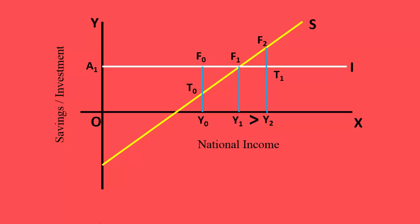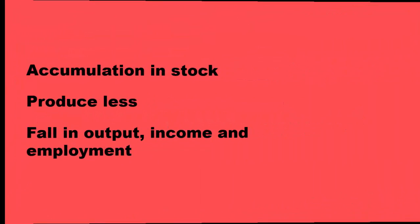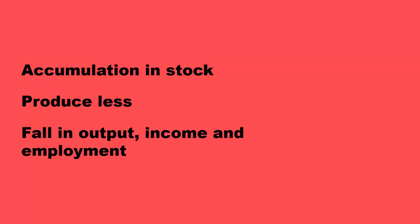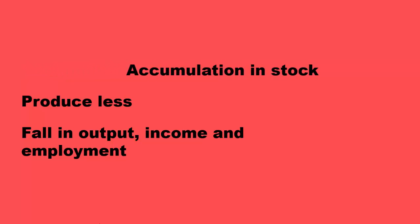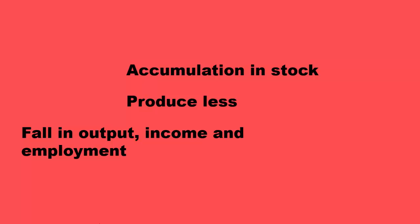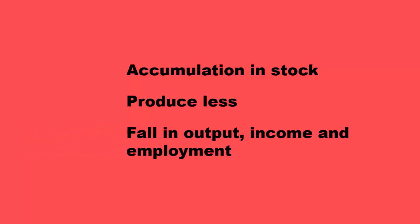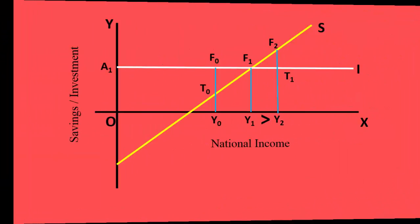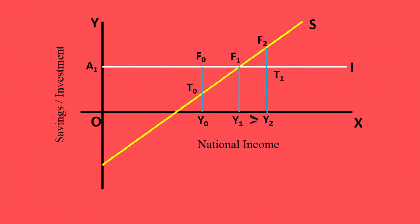The business community is unable to exhaust its entire stock. In turn, it leads to accumulation of undesired stock. In order to arrest further growth of stock, they produce less. Consequently, output, income, and employment will decrease. The economy will move towards the equilibrium level of income.